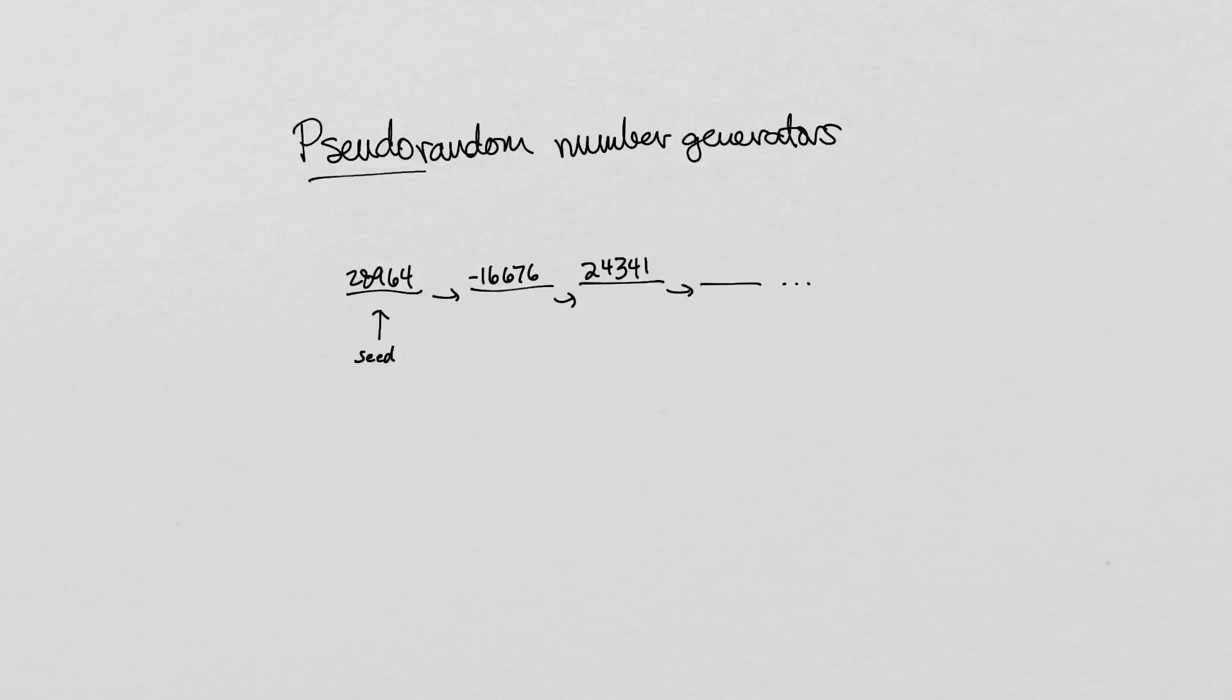Pseudo-random number generators perform well on reproducibility and typically also on speed, and they are sufficiently unpredictable for most applications in scientific computing.